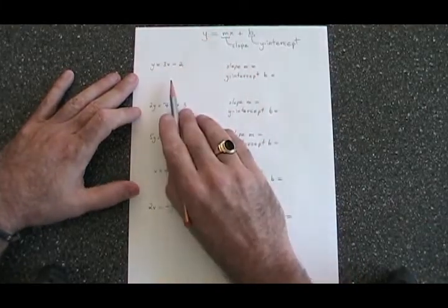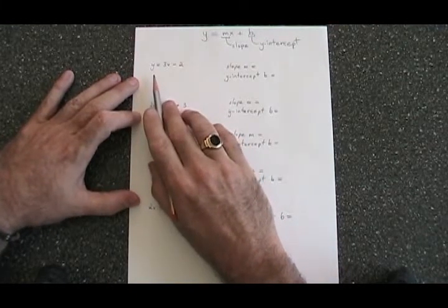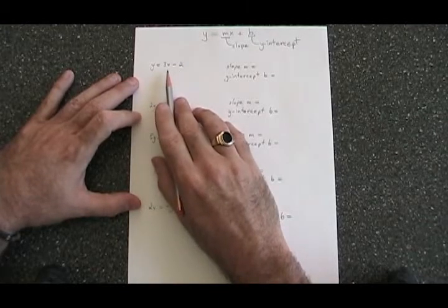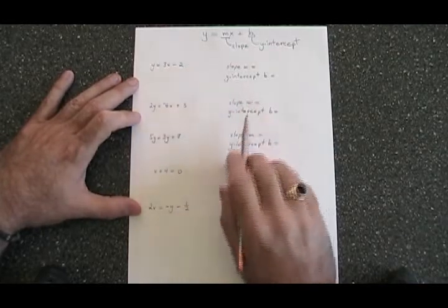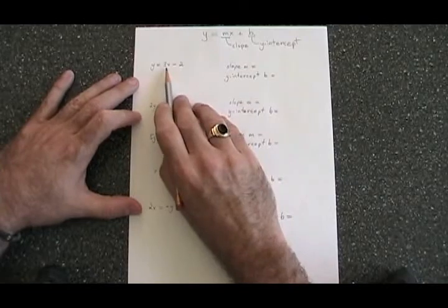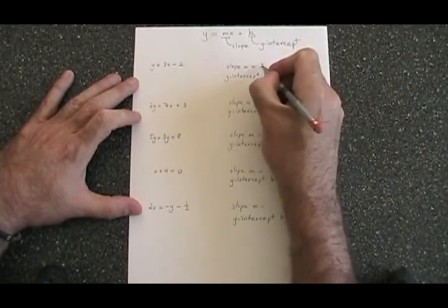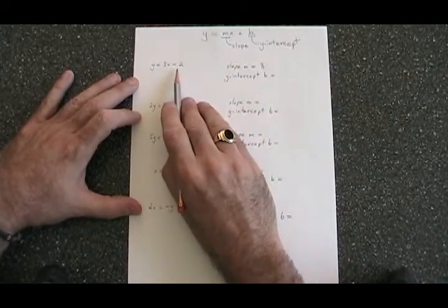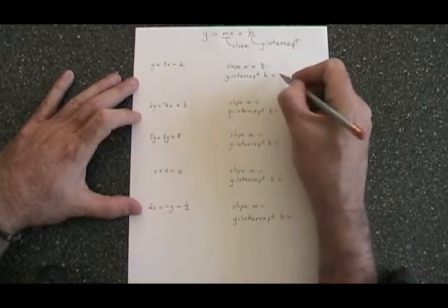In this first equation, y equals 3x minus 2, the y is already isolated and to the left. After the equal sign we have the term containing x and then finally we have a constant term. The slope m is equal to the numerical coefficient of x, so in this case the slope is 3. The y-intercept b is equal to the constant term with its sign, so in this case b is equal to negative 2.